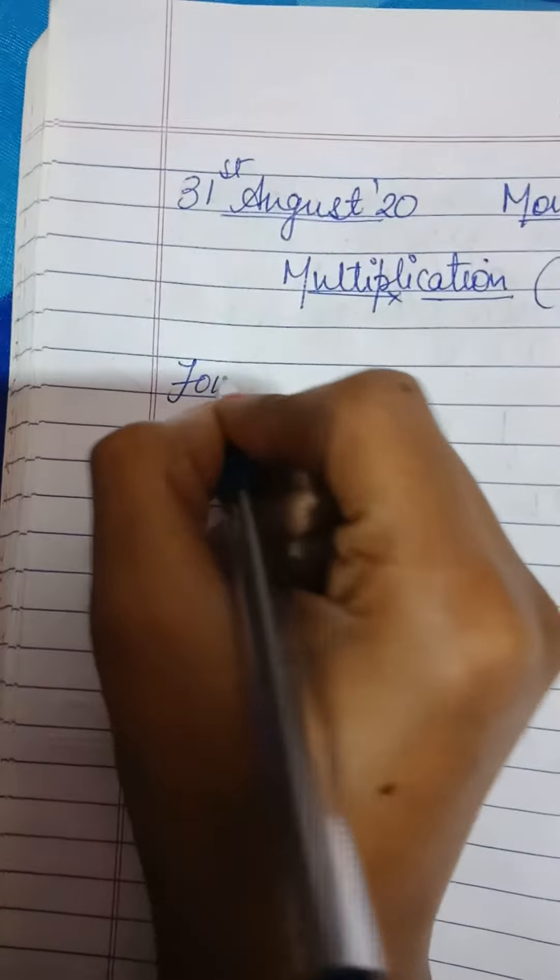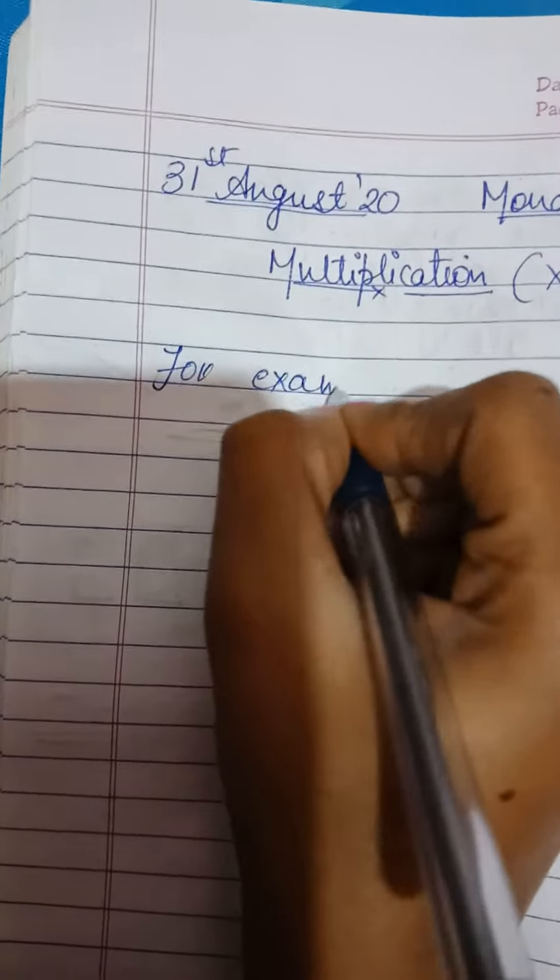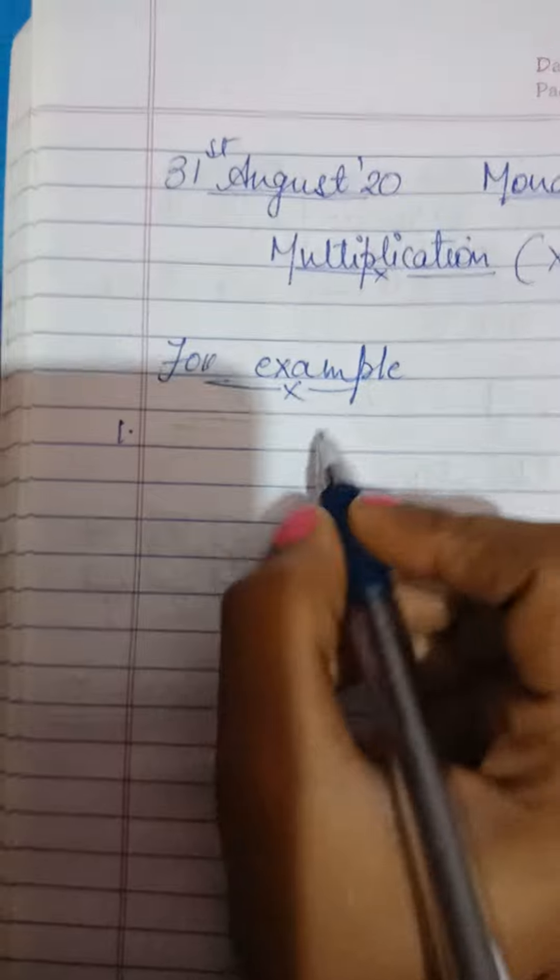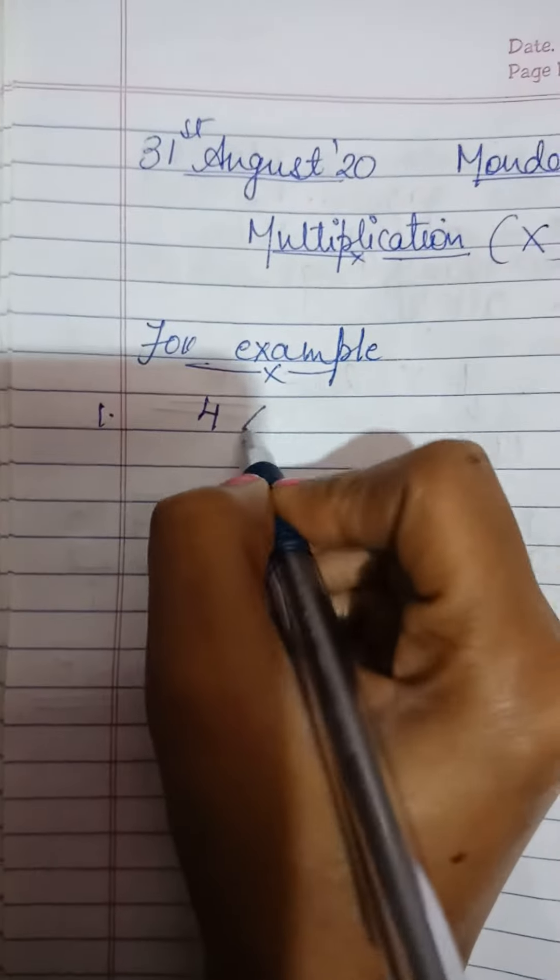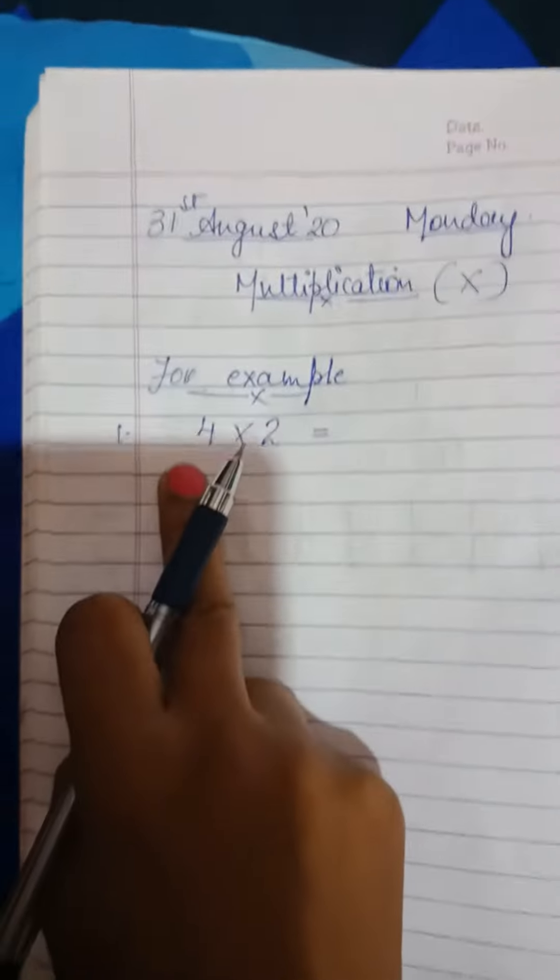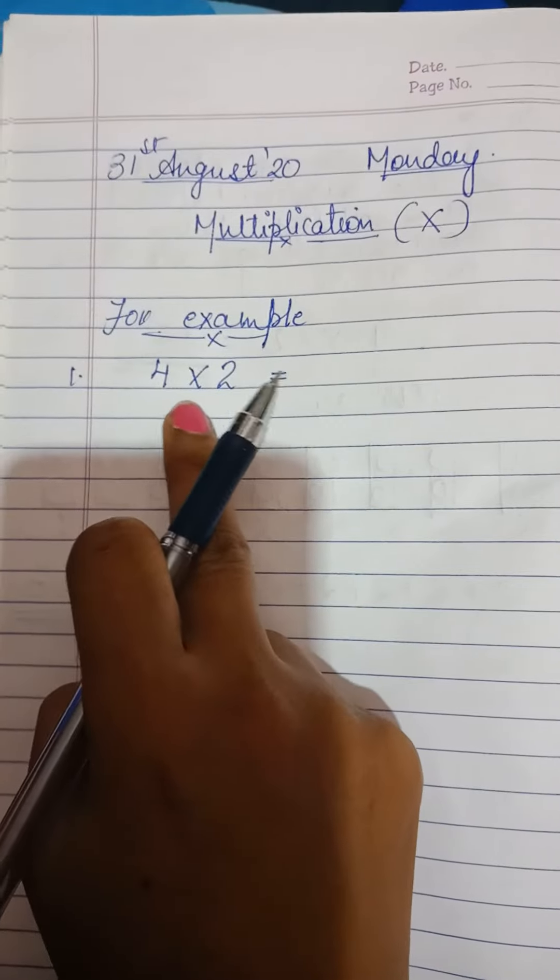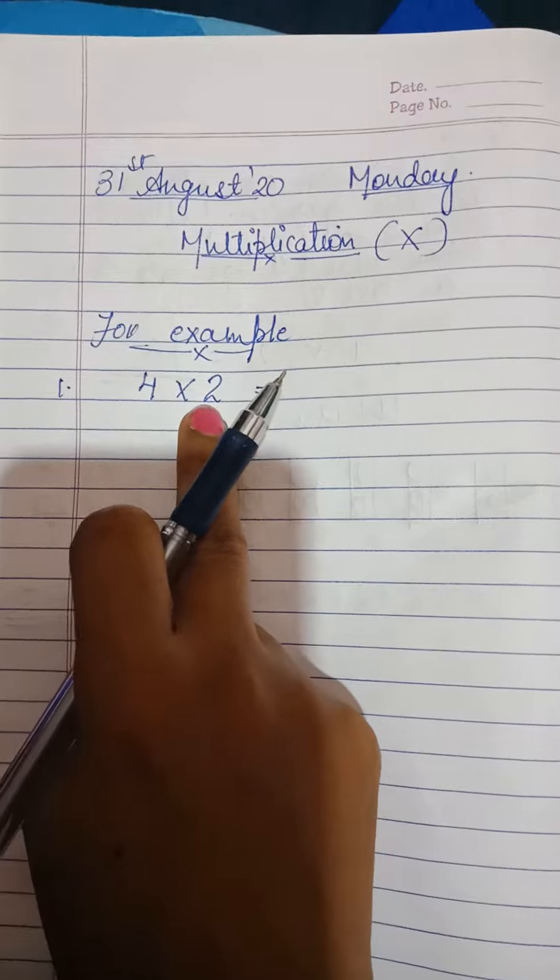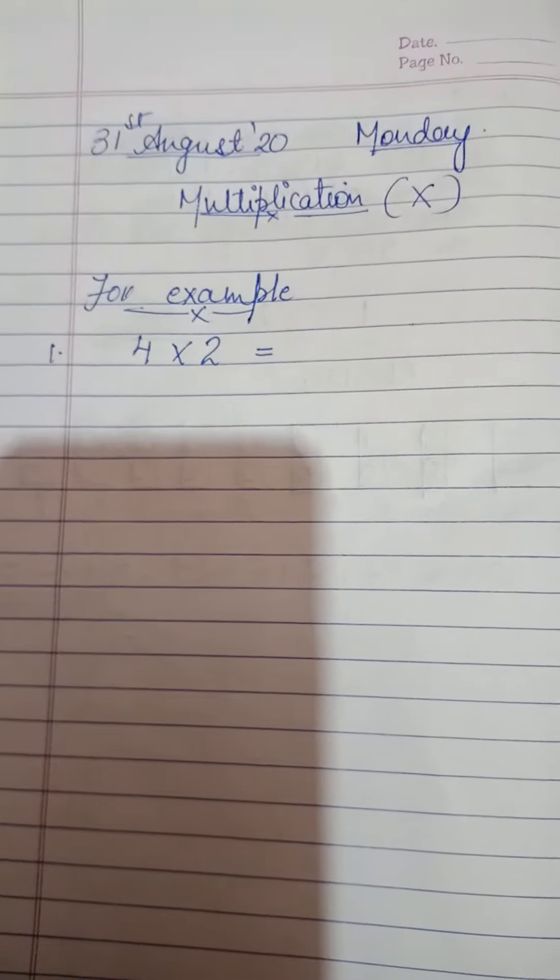So let's understand with the help of example. That means how do we multiply? Number 1. Suppose 4 x 2. Can you guess what is the answer or what will be the answer?